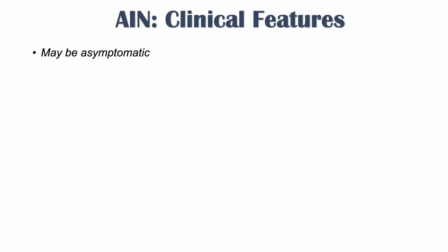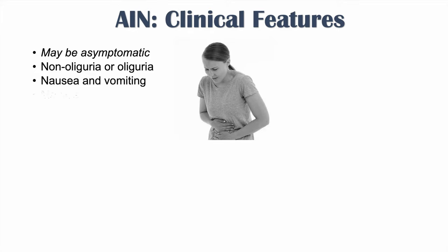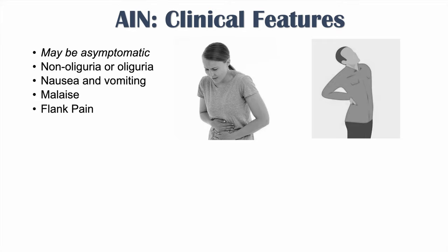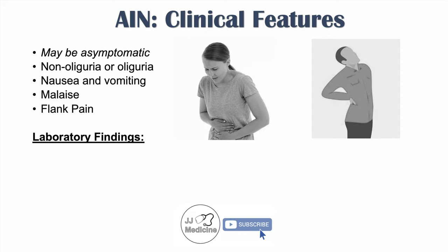The clinical features of AIN include the possibility of being entirely asymptomatic. It is often a non-oliguric AKI with no change in urine volume, but can be oliguric in some cases. Symptoms may include nausea and vomiting, malaise, and flank pain.